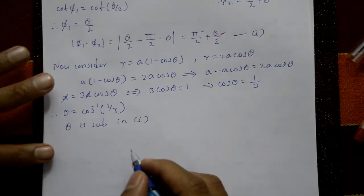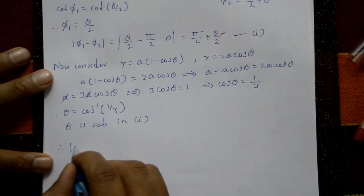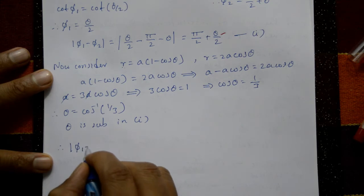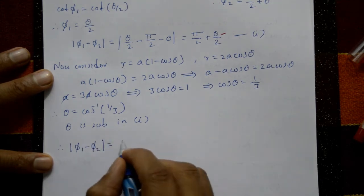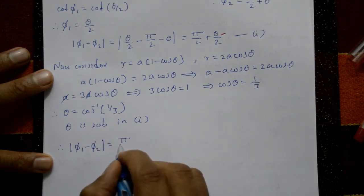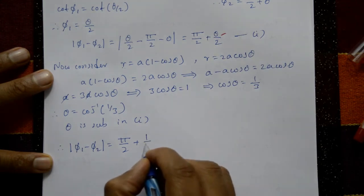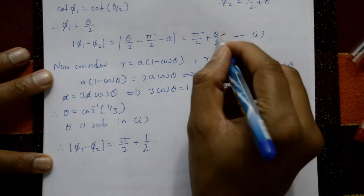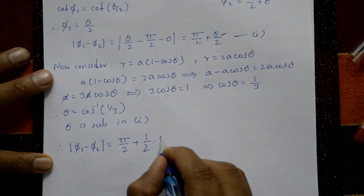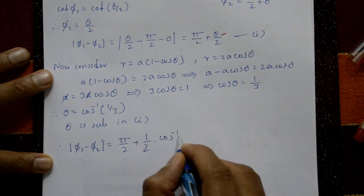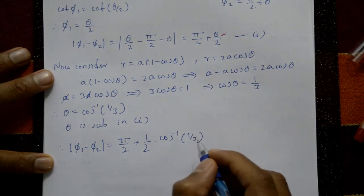Substituting θ = cos⁻¹(1/3) into equation 1: |φ₁ − φ₂| = π/2 + (1/2)·cos⁻¹(1/3). This is the required answer for the angle of intersection.